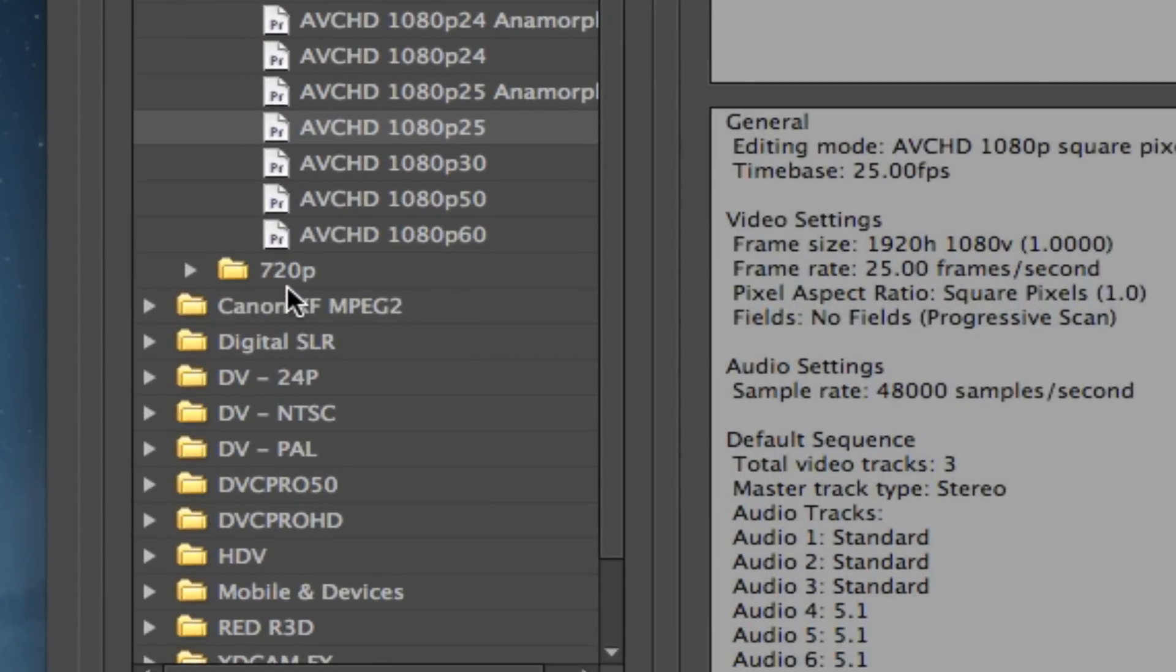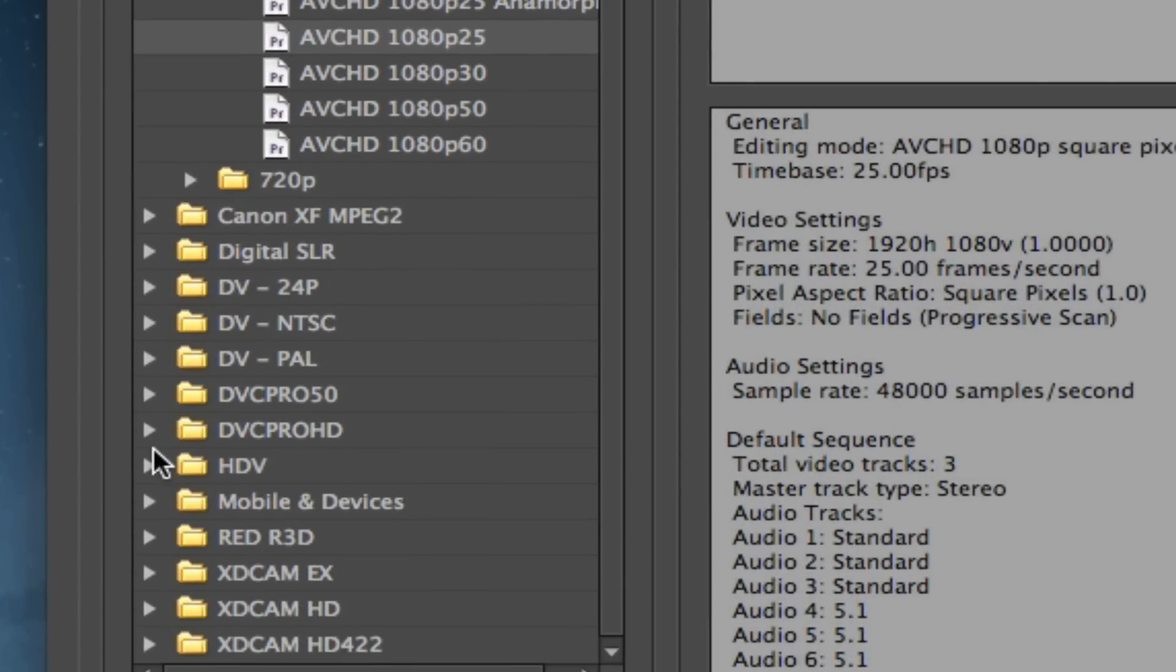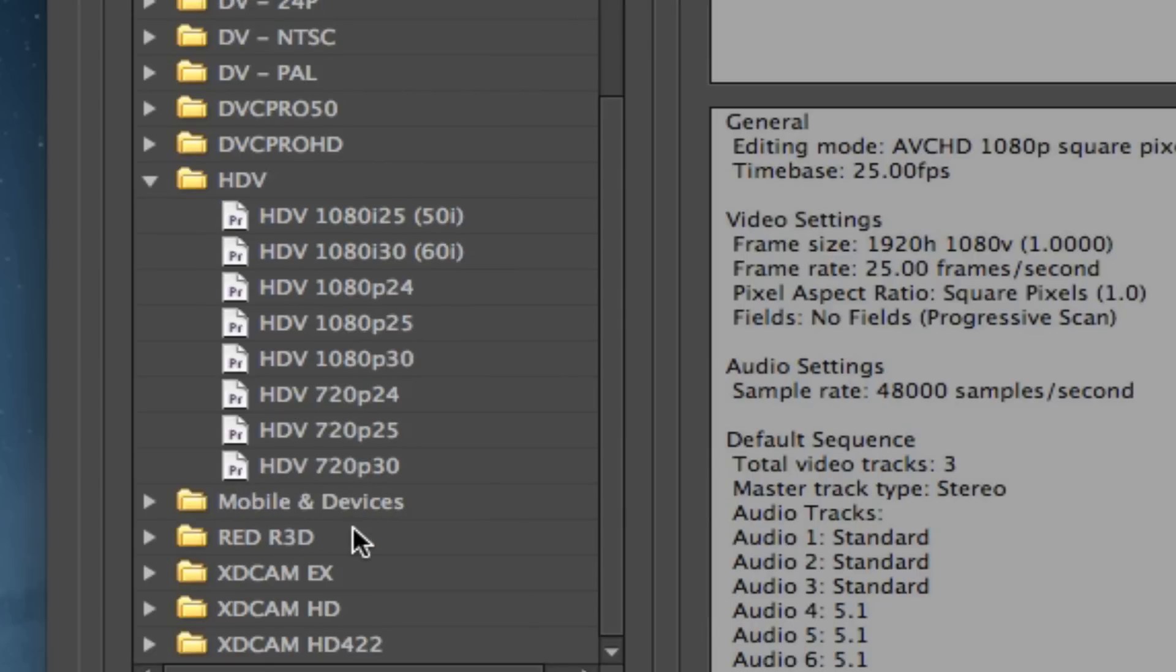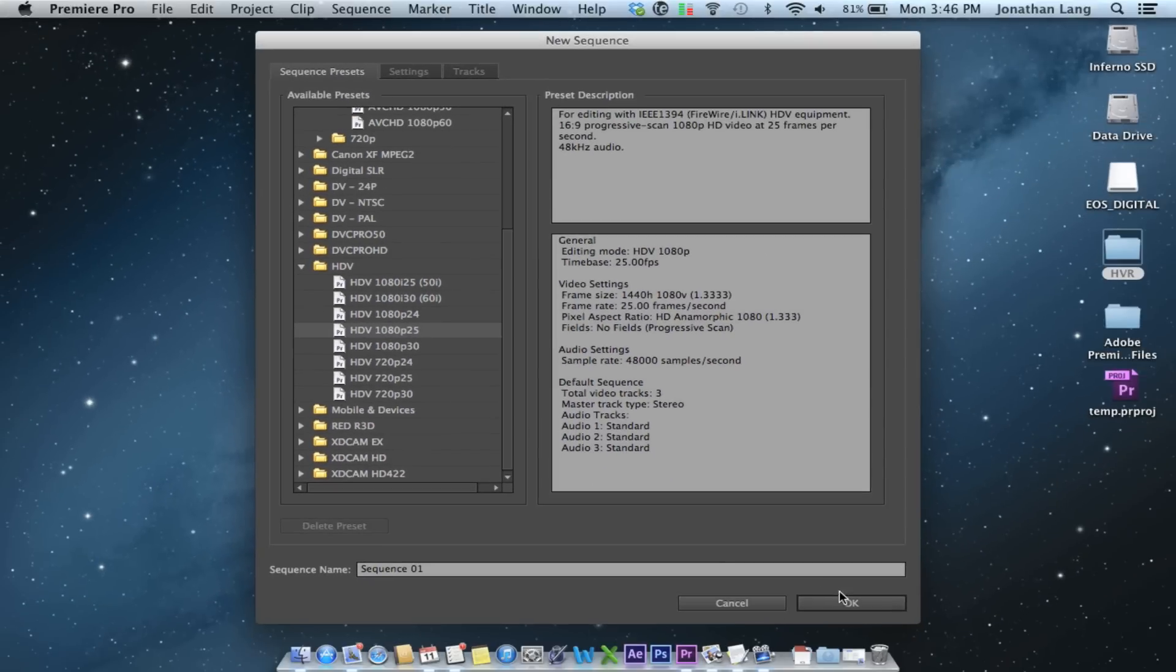And then I need to select the correct settings for this particular recorder, and that will be HDV. In my case, 1080p, 25 frames per second.